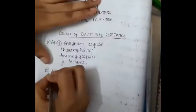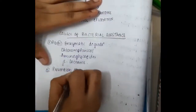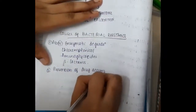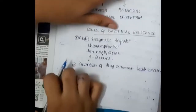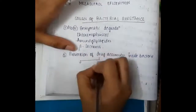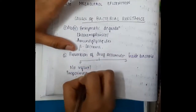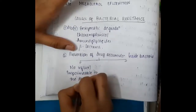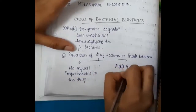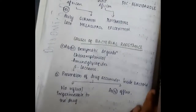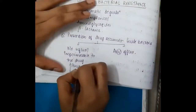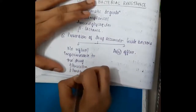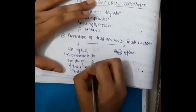The second cause of bacterial resistance is prevention of drug accumulation inside the bacteria. This has two mechanisms. One, no influx or the membrane is impermeable to the drug. Second, we have abnormal efflux. If there is no influx or the membrane is not permeable to the drug, these drugs include penicillin, pentamidine, and also melarsoprol.